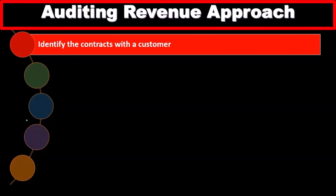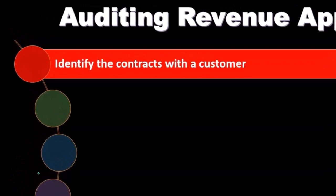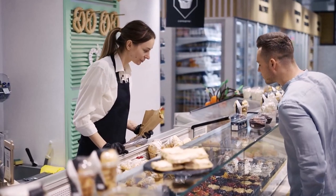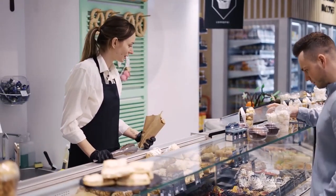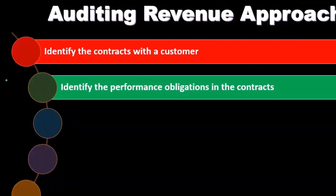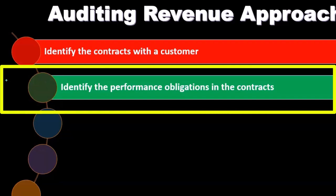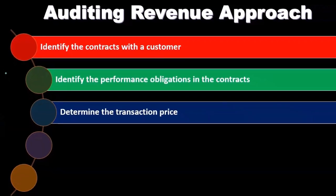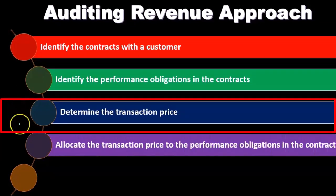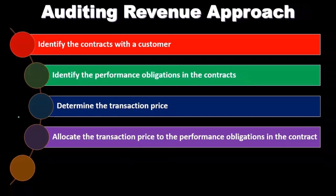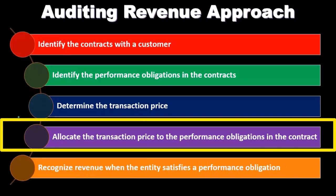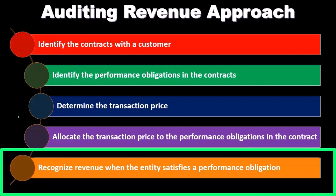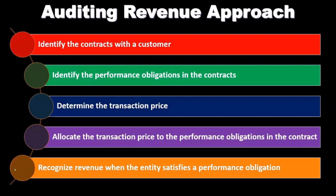In the auditing approach for revenue, we're going to have to understand the business — what is it that they do to generate revenue. We identify the contract with the customers: what kind of contract is involved, and is it goods or services or a combination of the two? We identify the performance obligations in the contract — what performance has to be done, because that's typically the point in time when revenue should be recognized. We determine the transaction price, allocate it to the performance obligations in the contract, and then recognize revenue when the entity satisfies those performance obligations — which is in alignment with the revenue recognition principle.